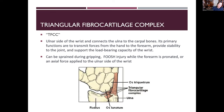The triangular fibrocartilage complex (TFCC) on the ulnar side of the wrist connects the ulna to the carpal bones. It transmits forces from the hand to the forearm, provides joint stability, and supports load-bearing. The TFCC can be strained during gripping or damaged during a FOOSH when the forearm is pronated, or when an axial force is applied to the ulnar side of the wrist.